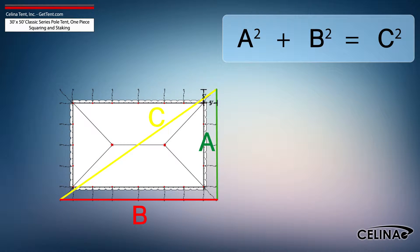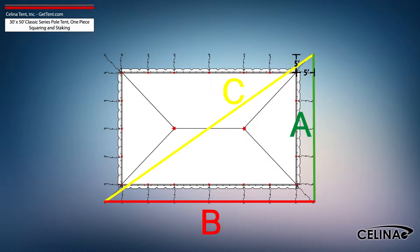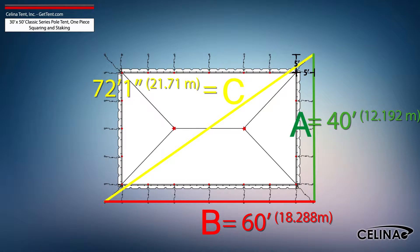Using the Pythagorean theorem and adjusting out for 5-foot staking, the entire tent footprint will be 40-foot by 60-foot with a 72-foot 1-inch diagonal length.